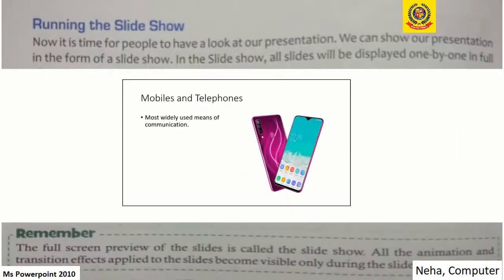Next is running the slideshow. Once our slideshow is done and we have made different slides, to run the slideshow we just click on Slideshow and then click From the Beginning, so we can see all the slides playing one by one. The full screen preview of the slides is called the slideshow. When we click on Slideshow it opens in full screen mode, and all the animations and transition effects applied to the slides become visible only during the slideshow.